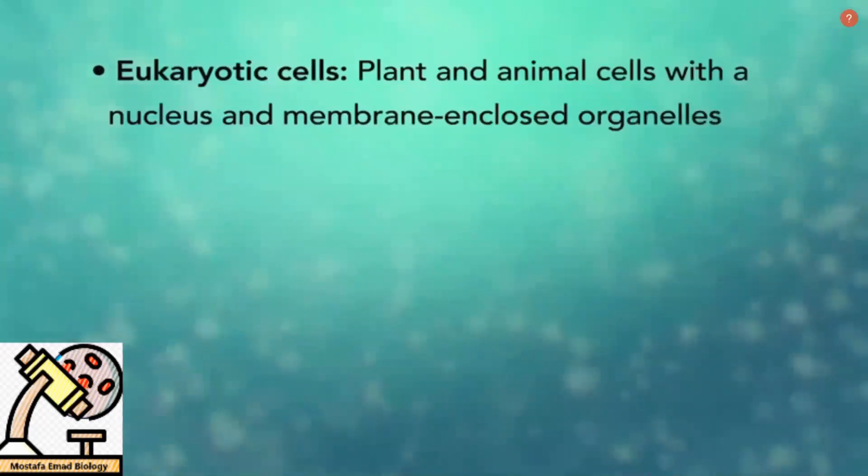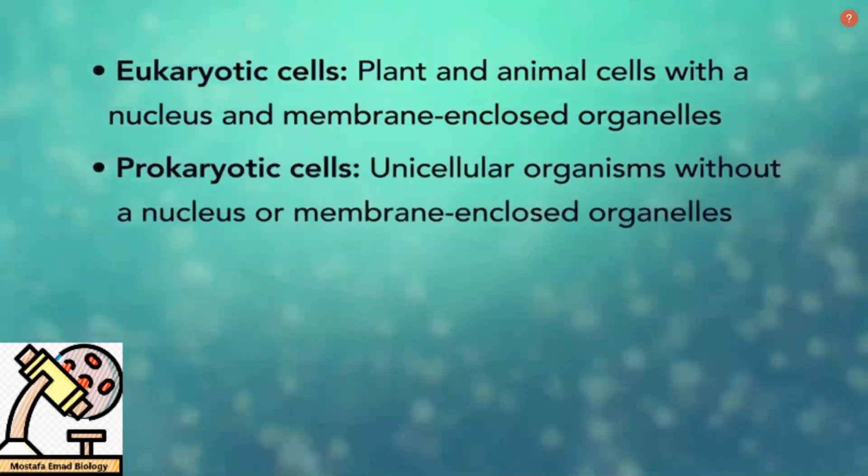In summary, remember, eukaryotic cells are plant and animal cells with a nucleus and membrane-enclosed organelles, while prokaryotic cells are unicellular organisms without these things.